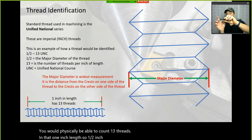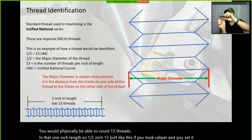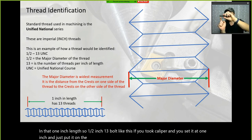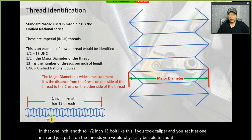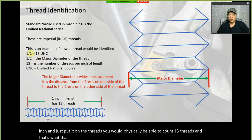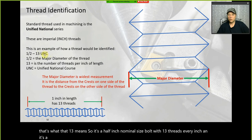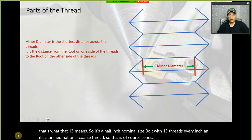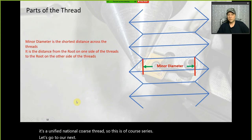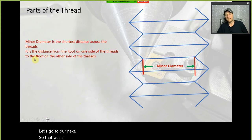If you took a caliper set at one inch and put it on the threads, you would physically be able to count 13 threads. So it's a half-inch nominal size bolt with 13 threads per inch in the Unified National Coarse series.